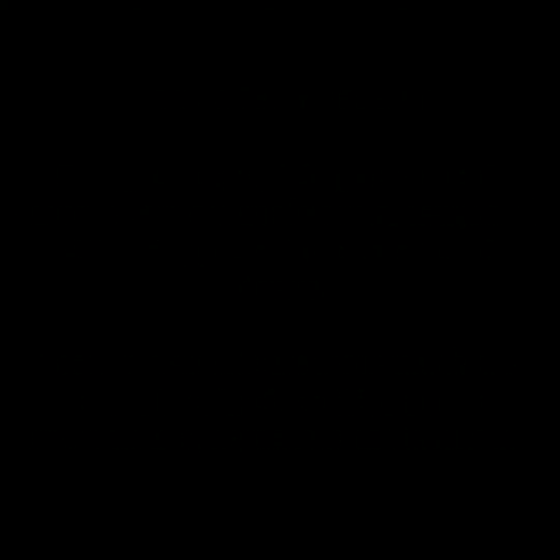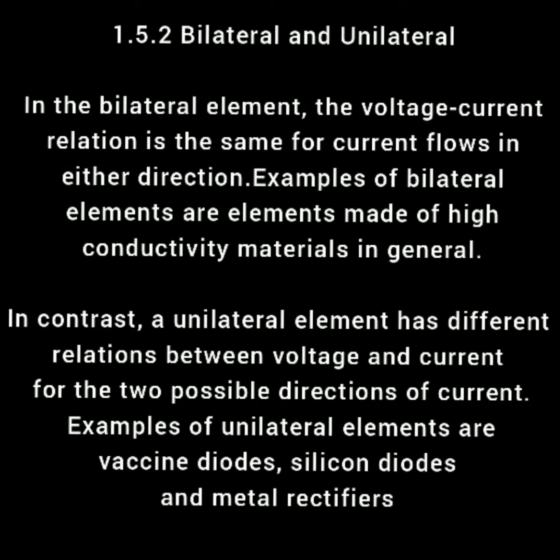The second classification is bilateral and unilateral. In a bilateral element, the voltage-current relation is the same for current flowing in either direction. Examples of bilateral elements are elements made of high conductivity materials in general. In contrast, a unilateral element has different relations between voltage and current for the two possible directions of current. Examples of unilateral elements are vacuum diodes, silicon diodes, and metal rectifiers.